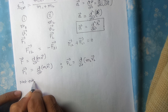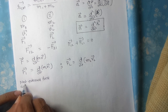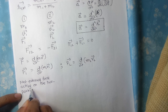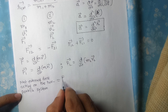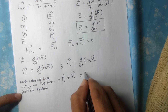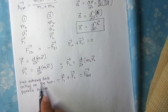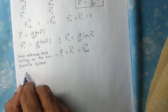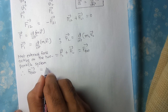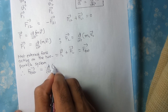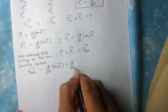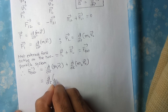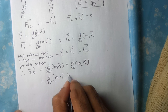So the net external force acting on the two-particle system is equal to F1 plus F2, and let us call it F_external. So F_external equals d by dt of M1V1 plus d by dt of M2V2, which I can write as d by dt of (M1V1 plus M2V2).